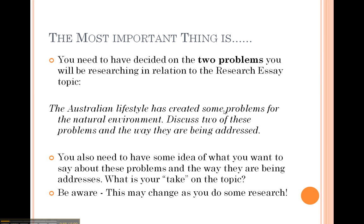What do you think are the two key problems that the Australian lifestyle has caused for the natural environment? You're going to look for information about those problems and research how they're being addressed. The Annotated Bibliography is the first step in doing that. Be aware that while you may have an idea about the topic and the issues around these problems, those ideas may change slightly as you find yourself reading and doing your research.